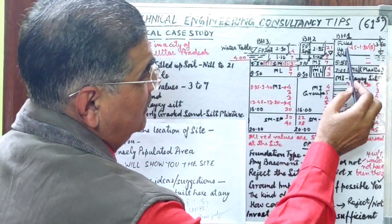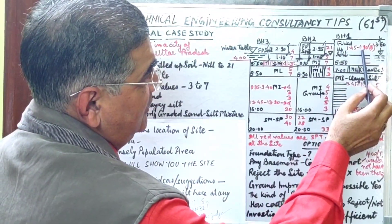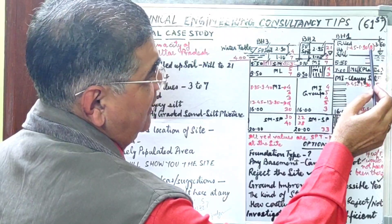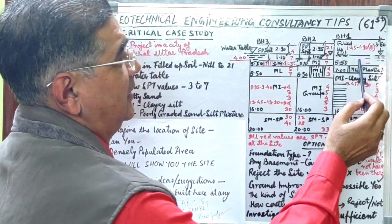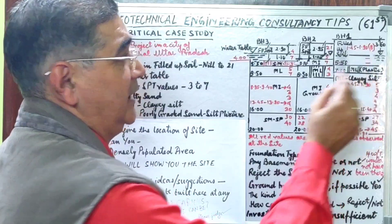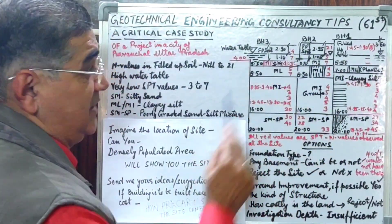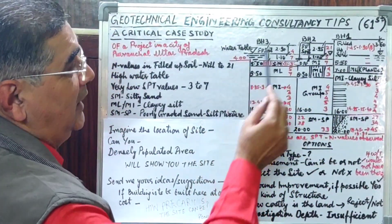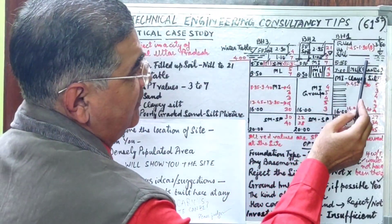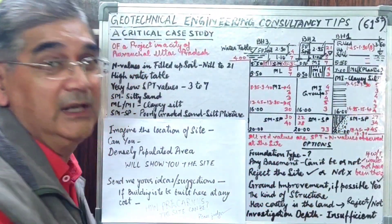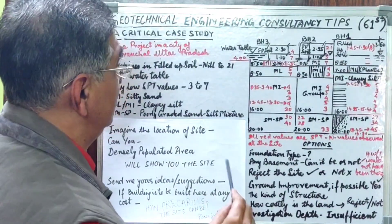In the filled-up soil, the SPT N-value from 1.45 to 1.90 meters depth was found to be 8 in borehole 1, 21 in borehole 2, and 4 in borehole 3. After that, the values were 7, 5, and 2 respectively. So N-values in filled-up soil ranged from 2 to 21, including nil standard penetration test values.